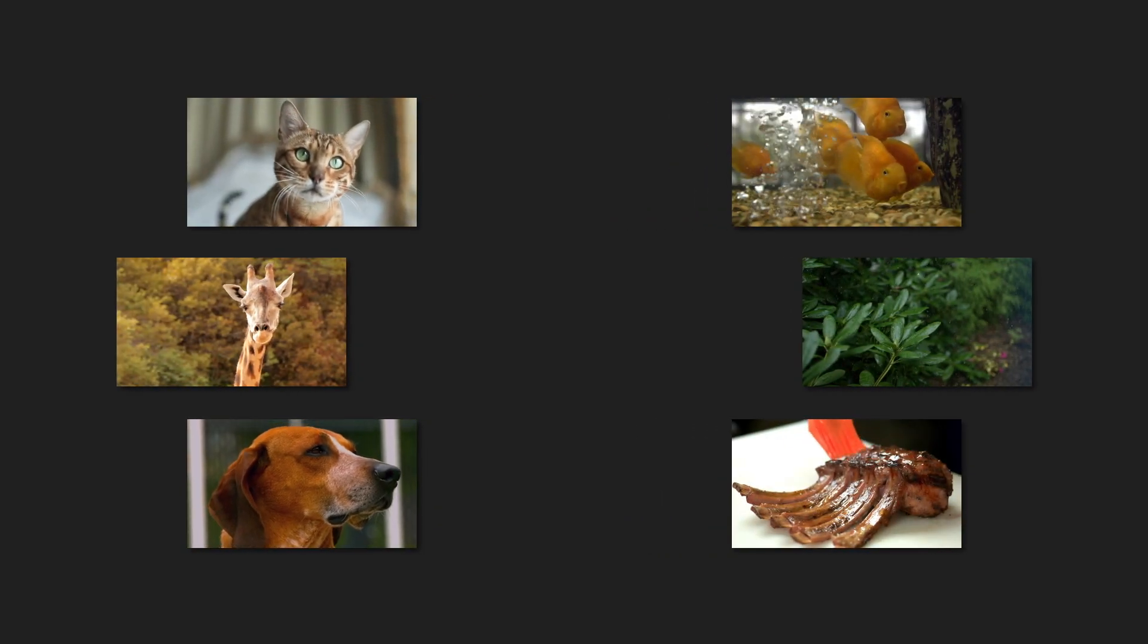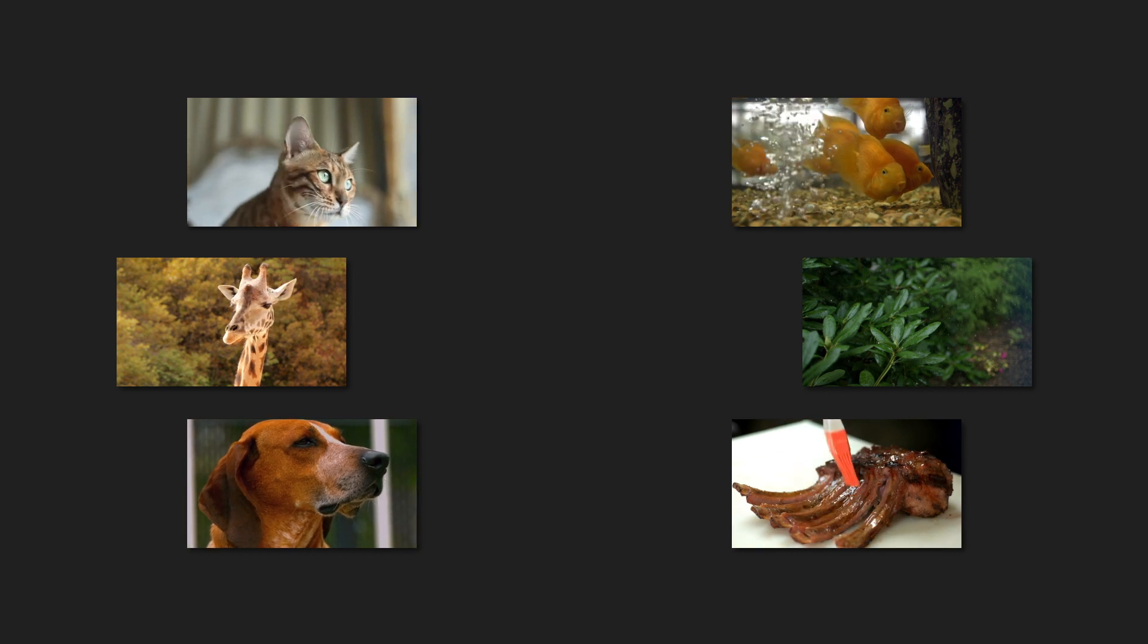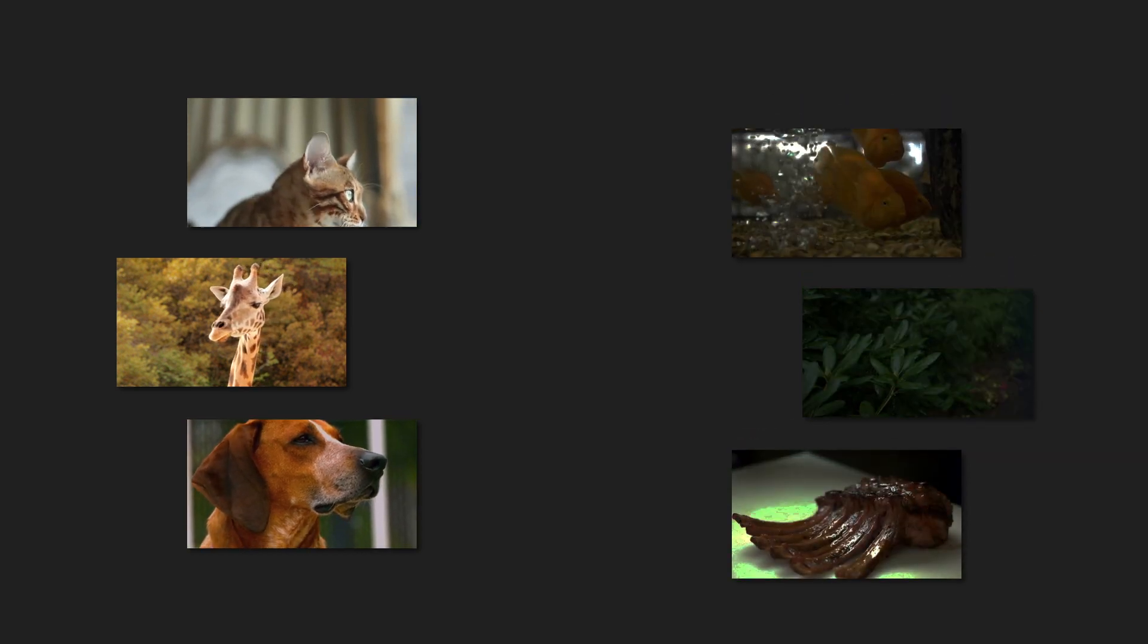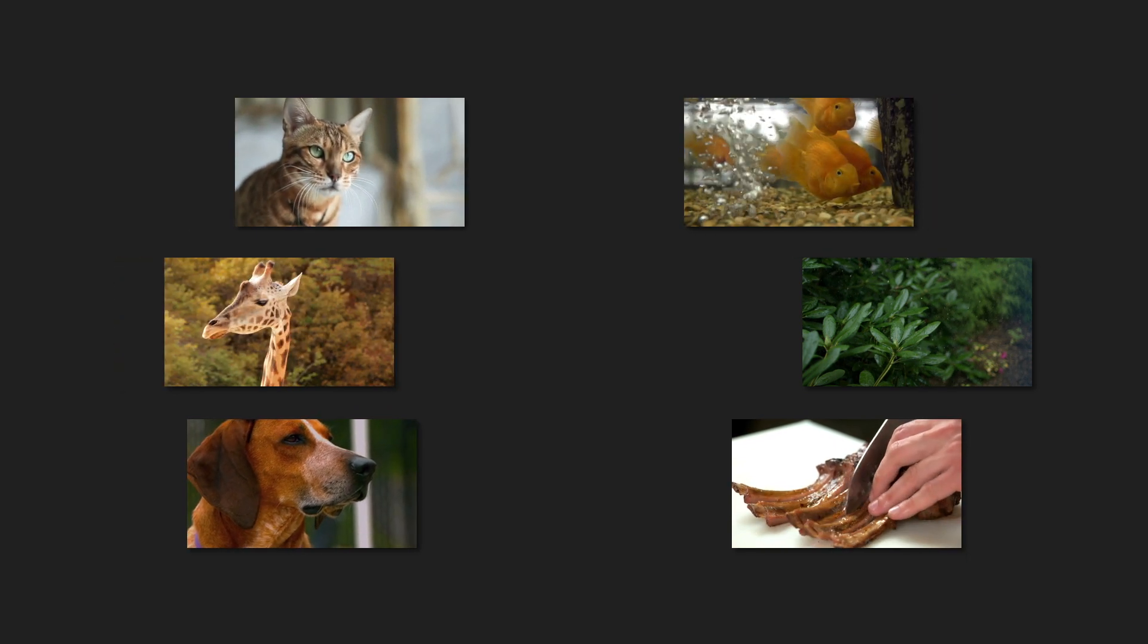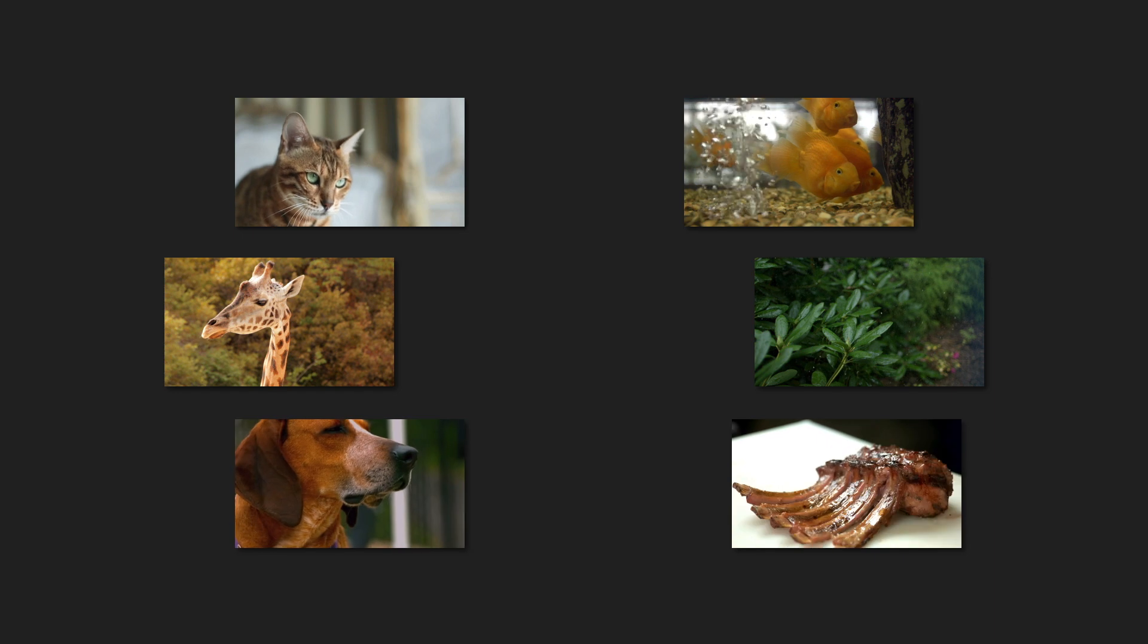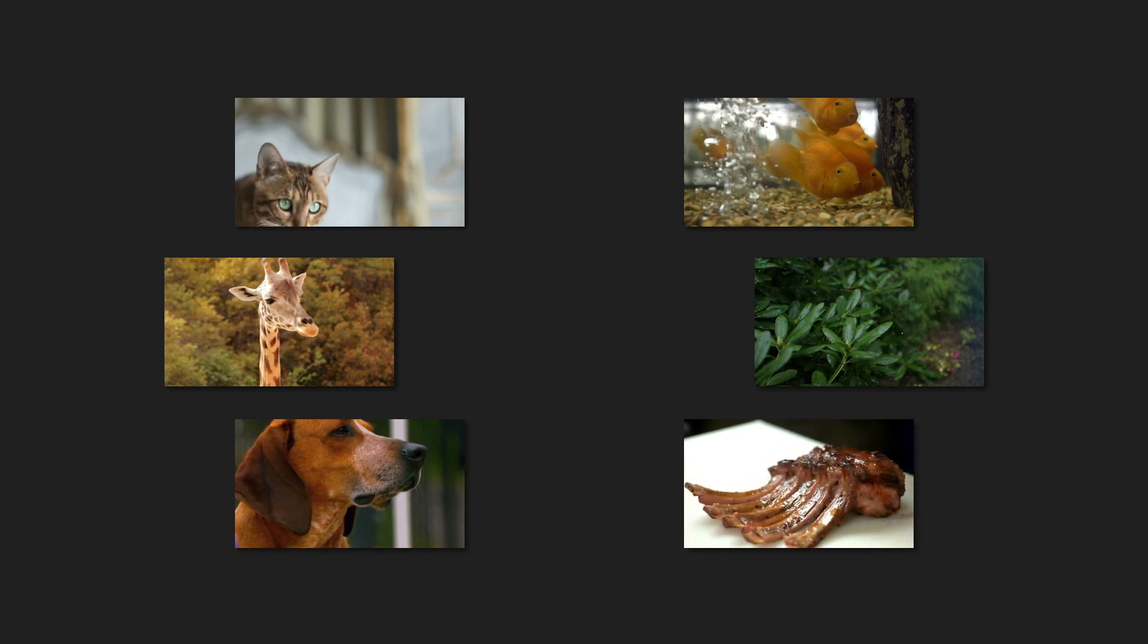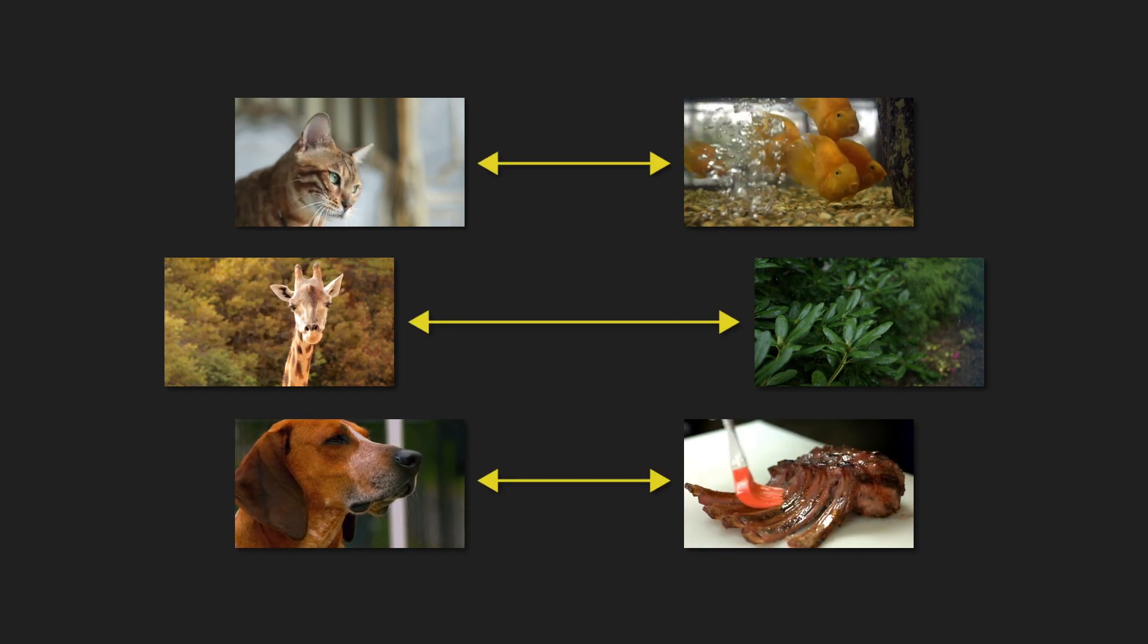Of course we can count, but the mathematical way that we do this is via a correspondence or a connection between the objects on the left and the objects on the right. For example, the cat likes to eat the fish, the giraffe likes to eat leaves, and the dog likes to eat the bone. So in this way we have a link from each object on the left to each object on the right. This is one way, and a very important way, for us to ascertain that both sets have the same size.